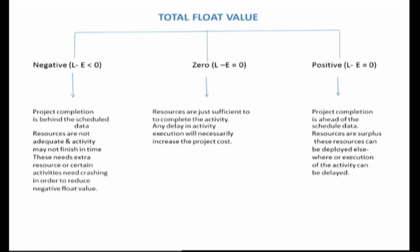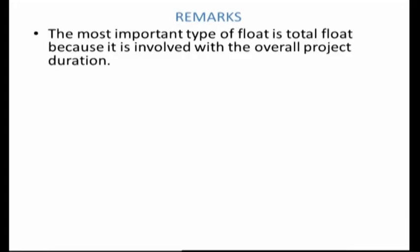With a positive float, resources are surplus and can be deployed elsewhere, or execution of the activity can be delayed. We are running ahead of time, and if any certain activity suffers a delay, we have that extra time as surplus. The most important type of float is total float because it is involved with the overall project duration. The change in the value of total float changes the interpretation of the entire project duration.